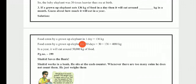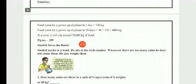An elephant eats 36 kg of food in a day, so we find how much it eats in a month and in a year. Since one year equals 12 months, the yearly food consumption is 4080 × 12 = 50,000 kg. So an elephant can eat 50,000 kg of food in one year.